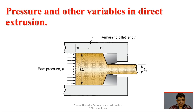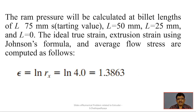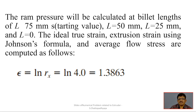This initial slide shows the extrusion setup: diameter D₀ is converted through the die to final diameter D_F, with remaining billet length L. We will calculate the ram pressure at billet lengths of L = 75mm (starting value), L = 50mm, L = 25mm, and L = 0.